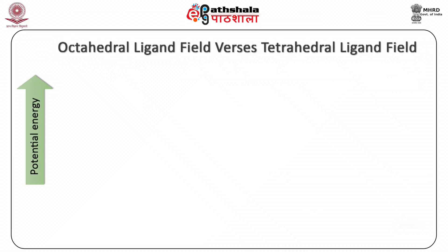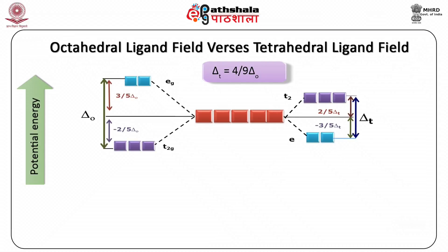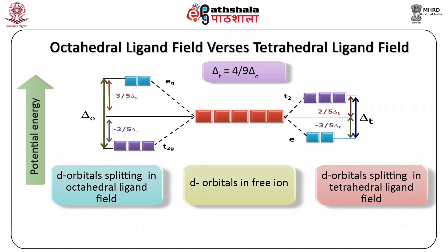The value of the tetrahedral splitting parameter delta T is equal to 4/9 times delta O, i.e., the octahedral ligand field splitting parameter. The tetrahedral ligand field splitting parameter is smaller compared to the octahedral ligand field splitting parameter. This is due to the fact that the relative degree of interaction between the point charge representing the ligand and the orbitals is smaller in the case of tetrahedral orientation compared to the octahedral field.